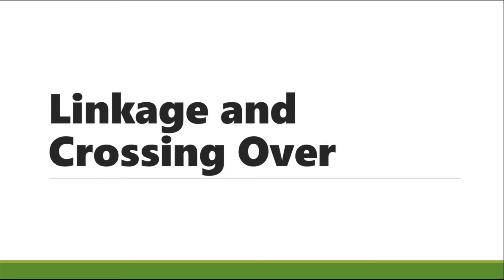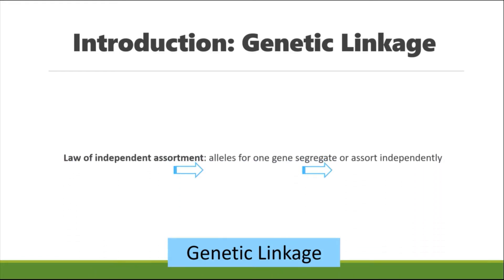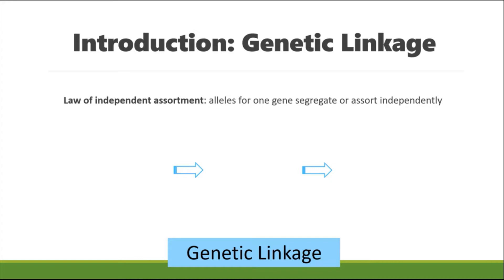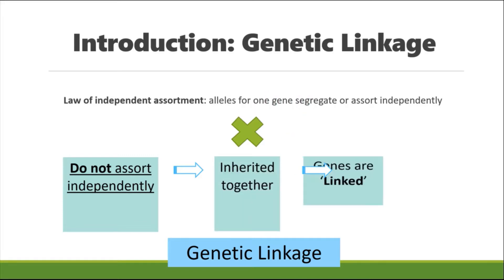Greetings. This is a section on linkage and crossing over. As discussed in previous presentations on Mendel's laws of inheritance, the third law of independent assortment states that during gamete formation, the two alleles for one gene segregate independently of the alleles for other genes. However, some patterns of inheritance do not follow Mendelian inheritance — genes found on the same chromosome do not assort independently and are inherited together, and therefore they are said to be linked.